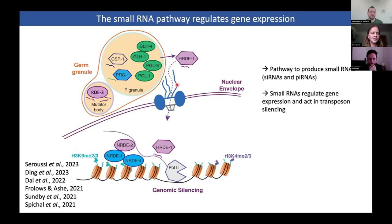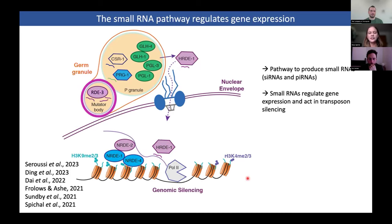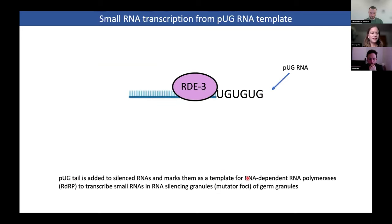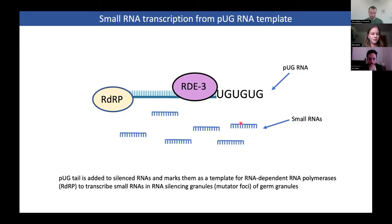Inside the mutator body, small RNAs will be transcribed from the template. These small RNAs will then be imported again into the nucleus by another Argonaute protein and bind to the nascent RNA transcript, which will then recruit different chromatin modifiers leading to chromatin modifications, genomic silencing, and degradation of the nascent RNA. The template has a poly-uridine tail and is called a PAK RNA. It recruits an RdRP that transcribes small RNAs necessary for the silencing process.